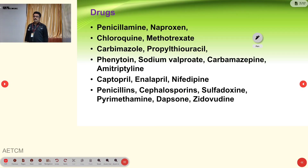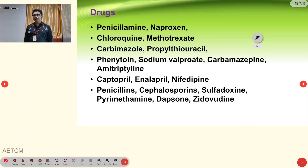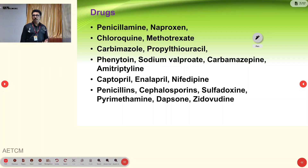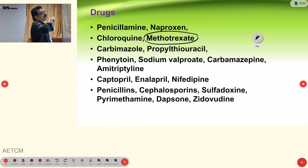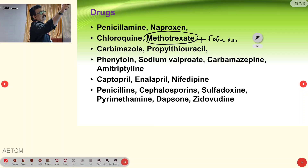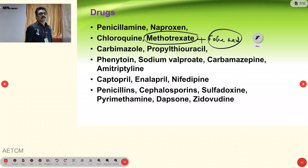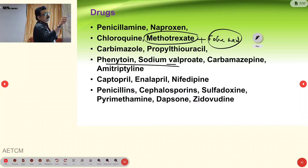Drugs that can produce neutropenia include penicillamine, naproxen (an NSAID), chloroquine, methotrexate, carbimazole and propylthiouracil (anti-thyroid drugs), phenytoin, sodium valproate, carbamazepine (anti-epileptic drugs), captopril, enalapril, nifedipine (anti-hypertensive drugs), penicillin, cephalosporin, sulphamethoxazole, pyrimethamine, dapsone, and zidovudine (anti-microbials). One important drug to remember is methotrexate — it should always be given with folic acid, but many patients miss that tablet and come back with severe neutropenia. Phenytoin and sodium valproate taken long-term also cause neutropenia.